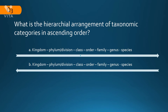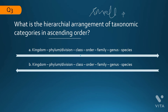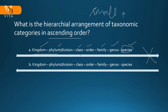The next question: what is the hierarchical arrangement of taxonomic categories in ascending order? The options shown are: kingdom, phylum, class, order, family, genus, species. Ascending order means small to large group. Here the smallest and most basic group is species, and kingdom is the largest. The arrow indicating species as the largest is the wrong option. The correct option shows species → genus → family → ... → kingdom, with kingdom as the largest taxon.